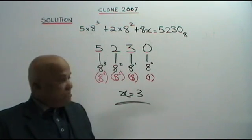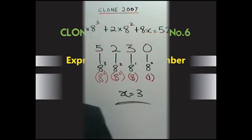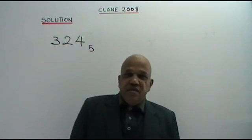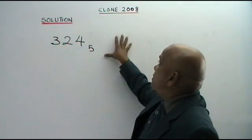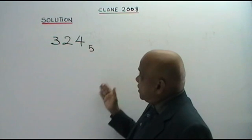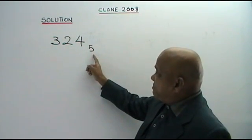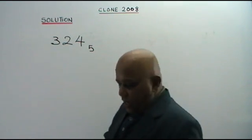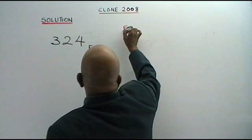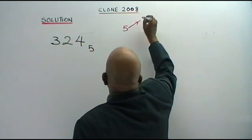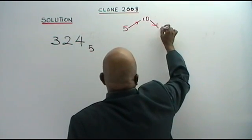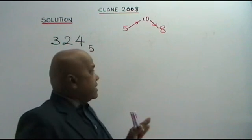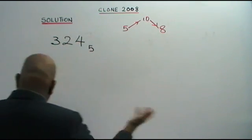I hope you have got it. It is not very difficult. Thank you. Here I have for you a clone question based on the year 2008. In this question, you are supposed to convert from base 5 to base 8. In order to do that, you convert from base 5 to base 10 first, then from base 10 to base 8. This is the standard technique.